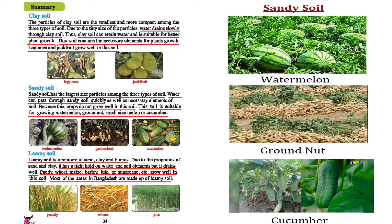Among the other two soils, sandy soil has the largest particles. Due to the large particle size, water passes through very quickly and cannot be retained. Only a small amount of water can be retained by sandy soil, which is why crops don't generally grow well in it. However, some crops like watermelon, groundnut, small-sized melon, or cucumber can grow well in sandy soil.